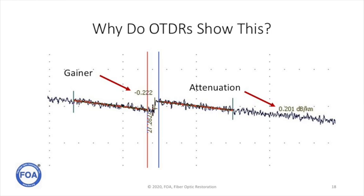If loss is negative and gain is positive, why would an OTDR show trace like this? You can see there is a gainer and attenuation measured on the trace. The attenuation is 0.201 dB per kilometer, but it's a positive number. And the gainer, which we know as a gain, shows the negative number, which is what we think should be for loss. So what's going on here?